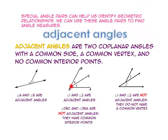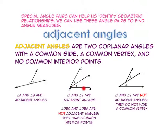Let's look at angle 1 and angle 2. They share a common side, a common vertex, and no common interior points. However, angle DBC is not adjacent to angle DBA because angle DBC is inside — therefore they share common interior points.